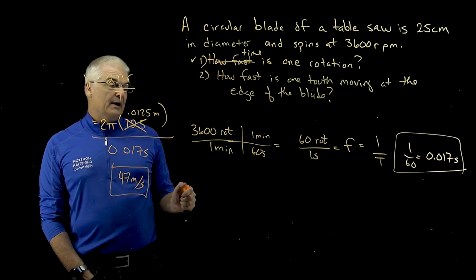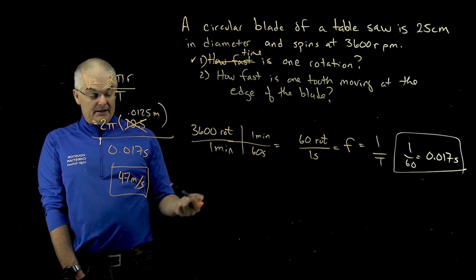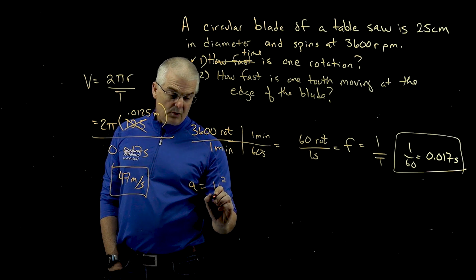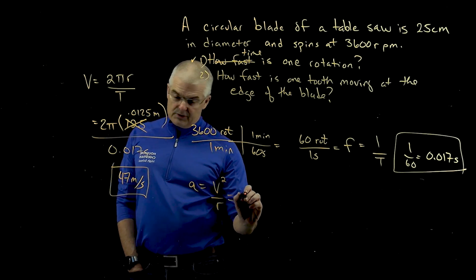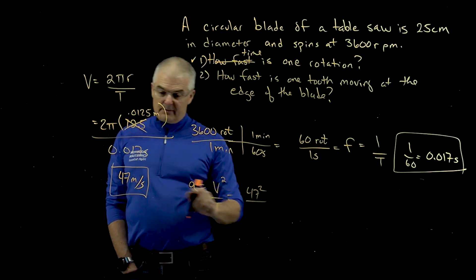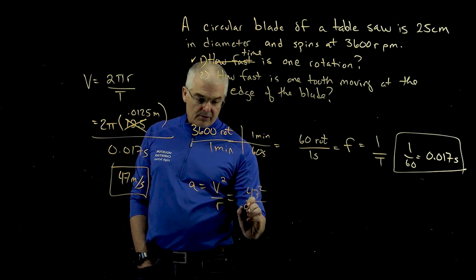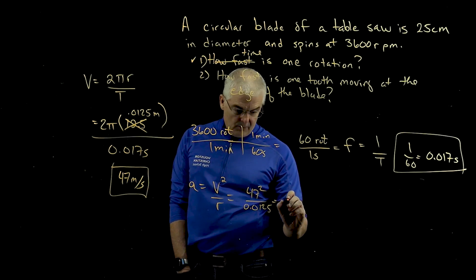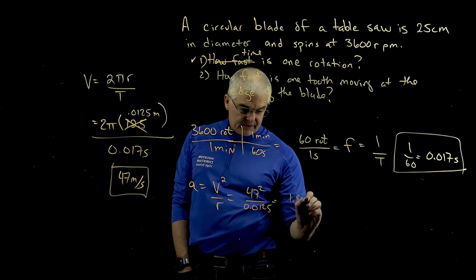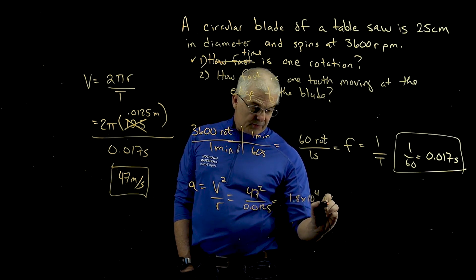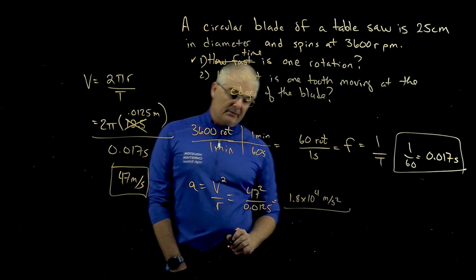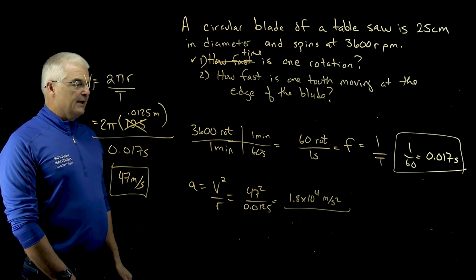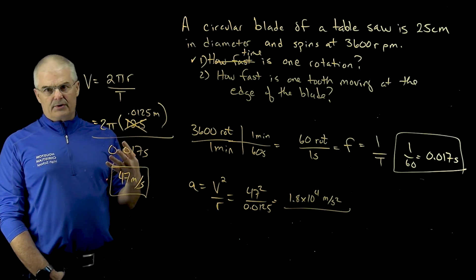And just for fun, you might ask, I just didn't ask it, but if I was to try and find the acceleration, the centripetal acceleration, a is v squared over r. I would just take 47 squared divided by the radius, which is 0.0125. And I get 1.8 times 10 to the fourth meters per second squared. So a very big number. It's going to be accelerating because it's changing its speed very rapidly. And yeah, so again, it's just utilizing the equations that we learned earlier.